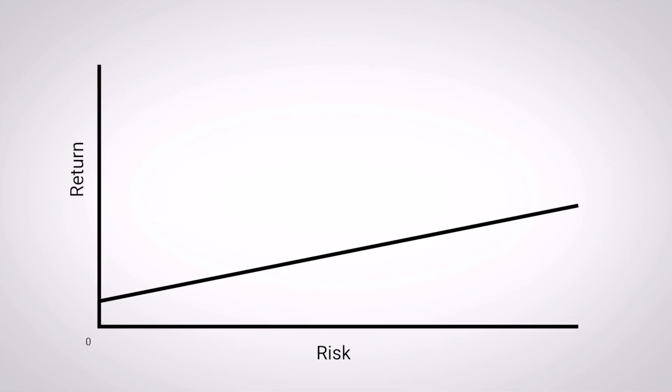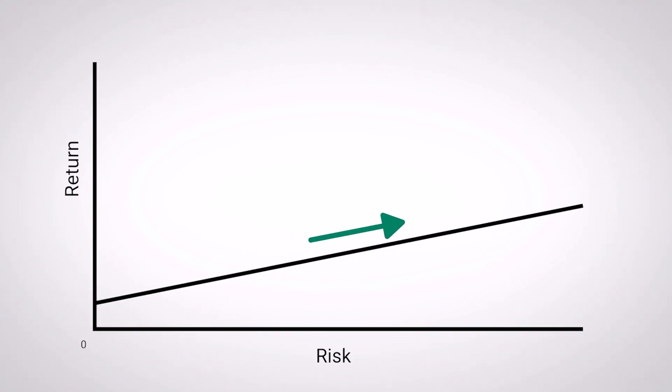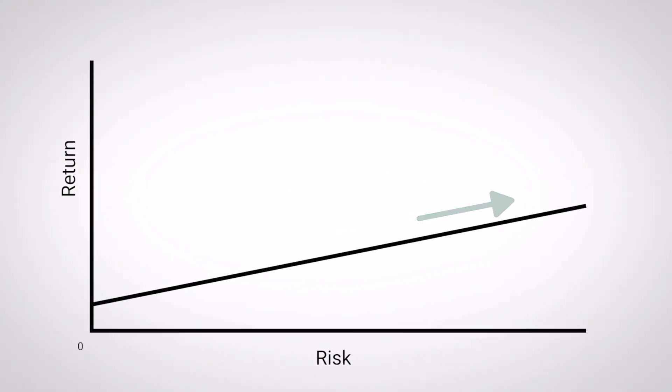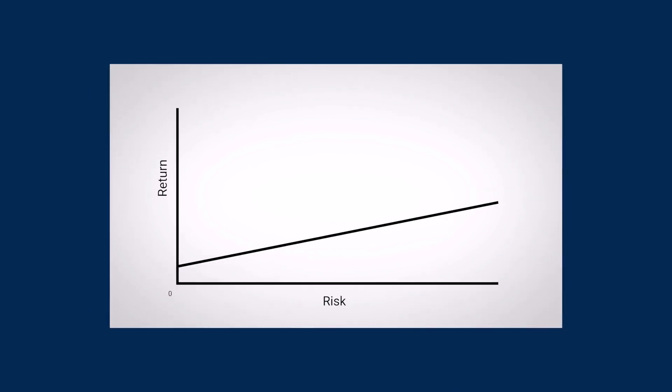When you look at the old graph, the linearity of the relationship between risk and return implies a dependable relationship. And I've always felt that that was misleading. I was never happy when I got out into the real world and had to live with the consequences. And so I developed my own version of that chart.